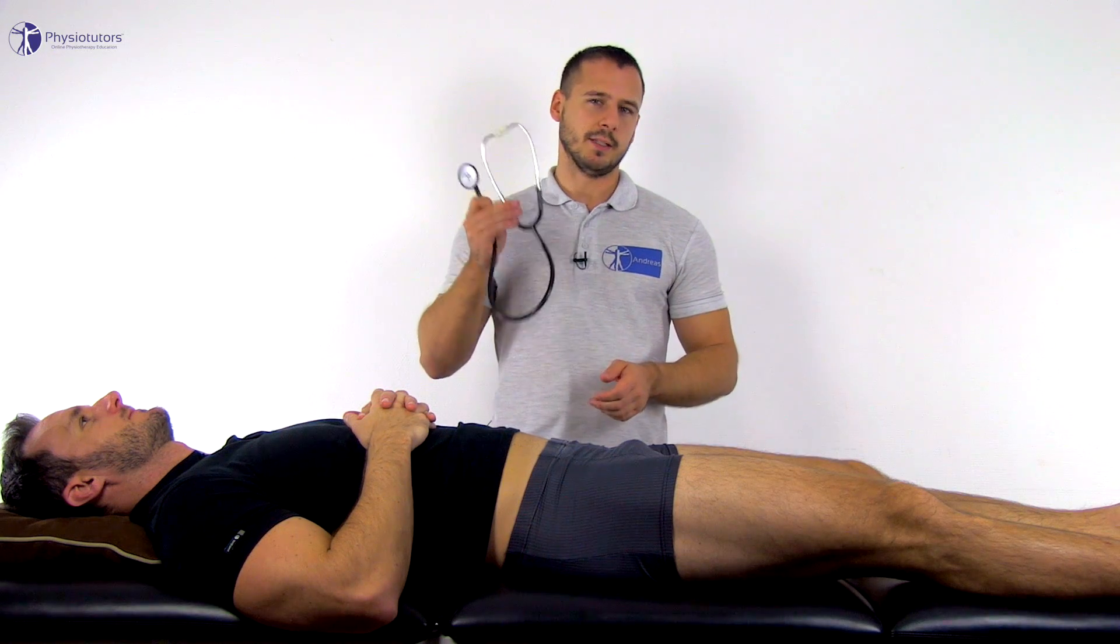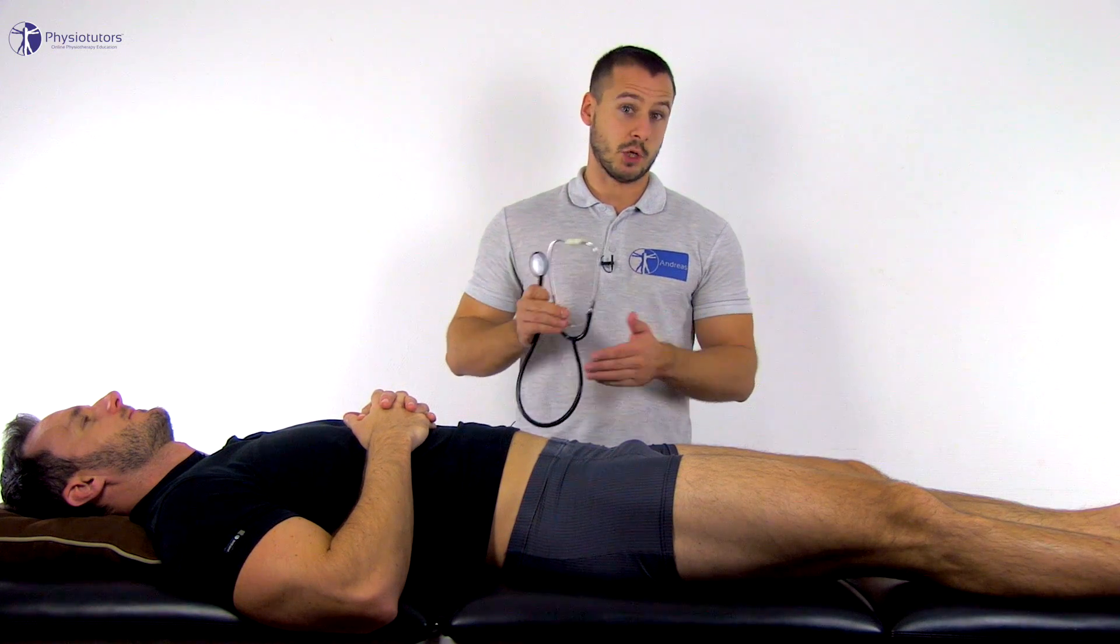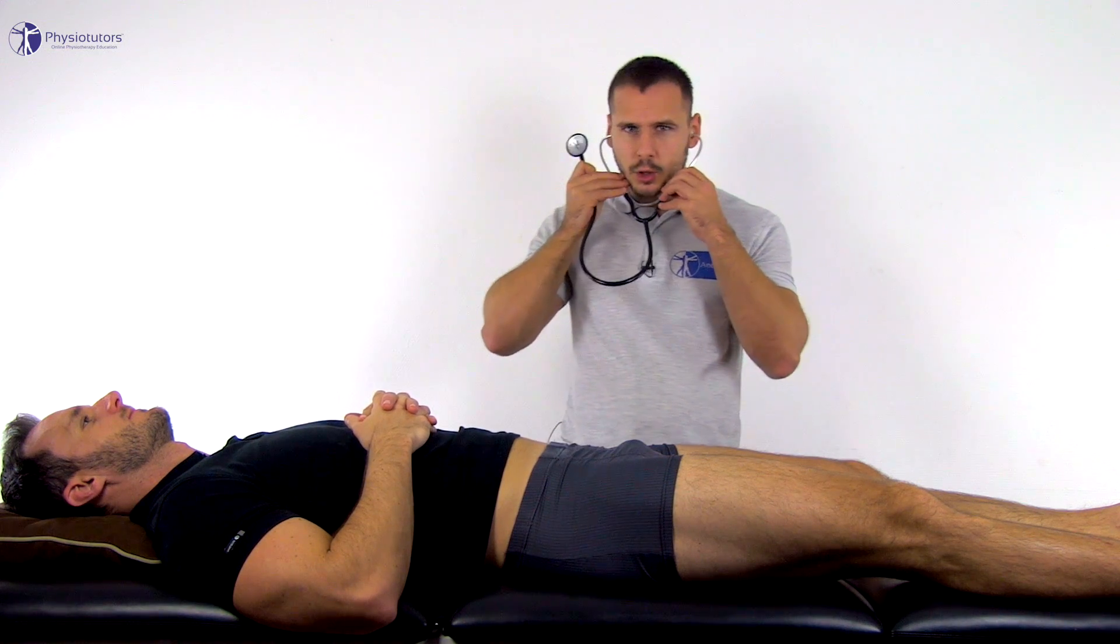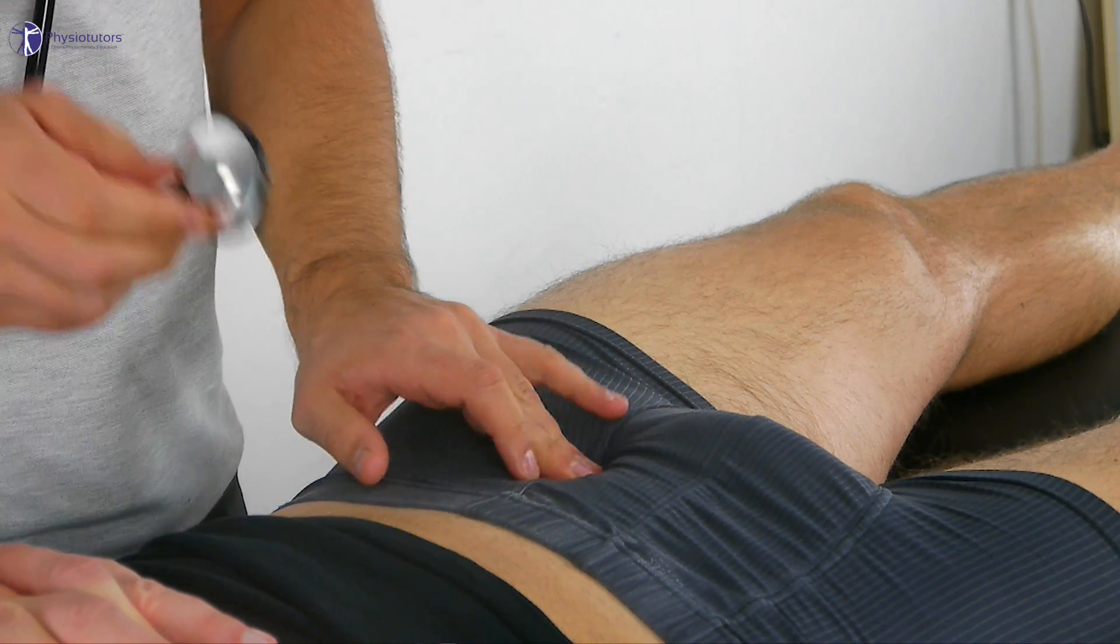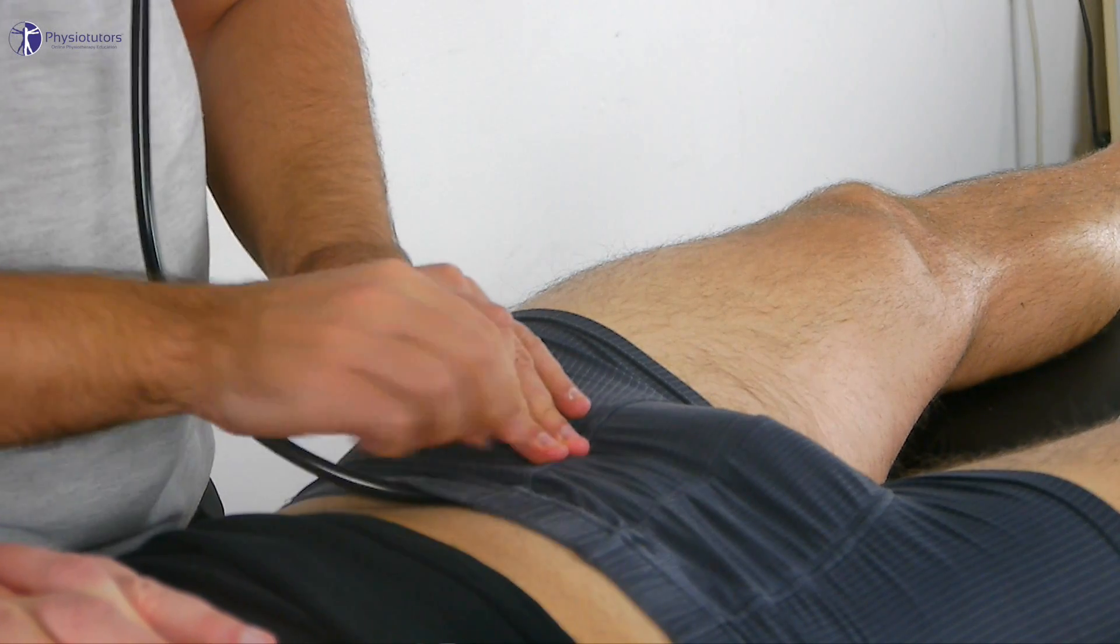To conduct the test, you will need a stethoscope. The patient lies in supine position and you will place the bell of the stethoscope on the pelvis, lateral to the pubic symphysis, on the pubic tubercle of the side you want to examine.